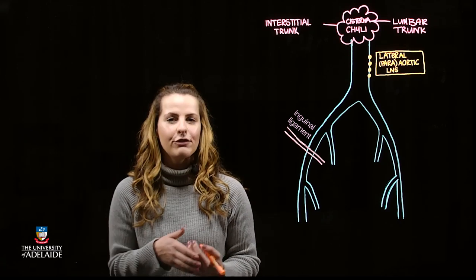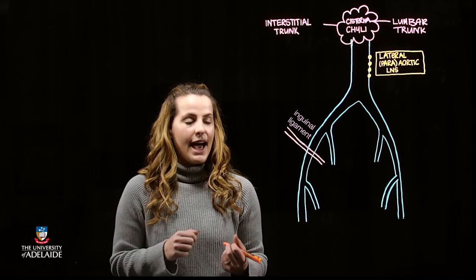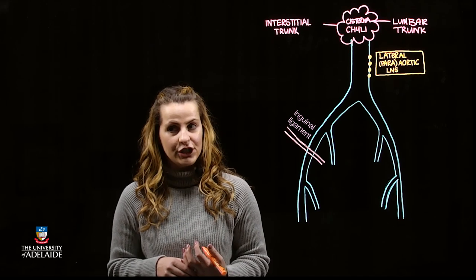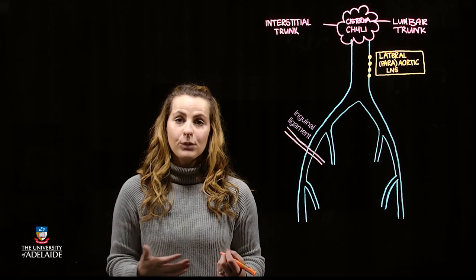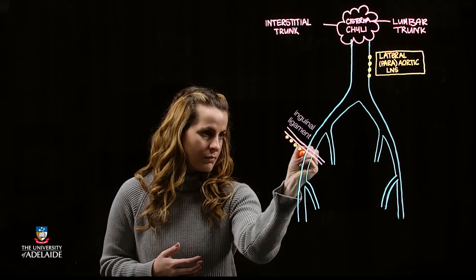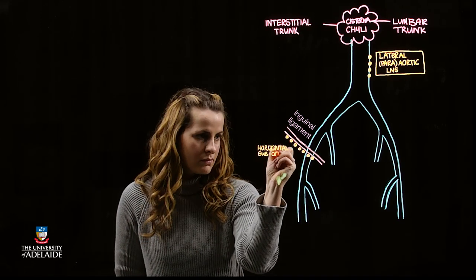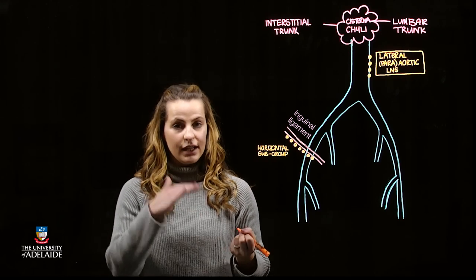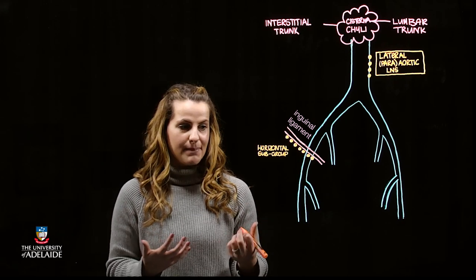Starting with the superficial group, we have around eight to ten major lymph nodes arranged in two different patterns and locations. The first is called the upper, or horizontal, superficial subgroup. This is going to be located just inferior to the inguinal ligament, arranged in a chain-like manner.